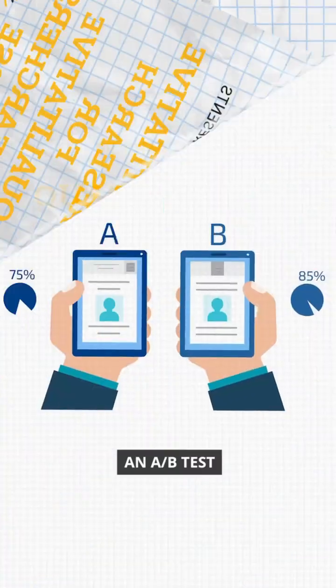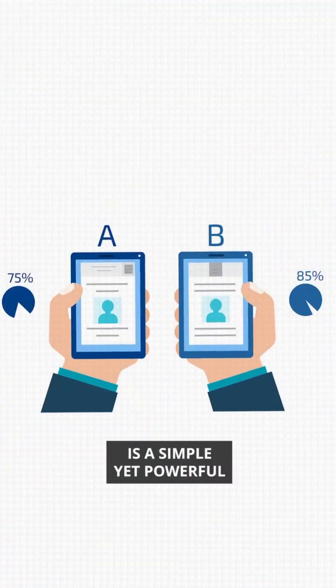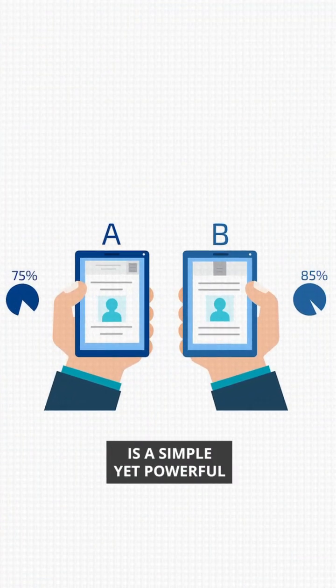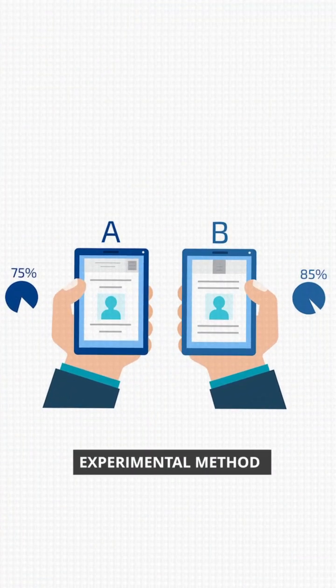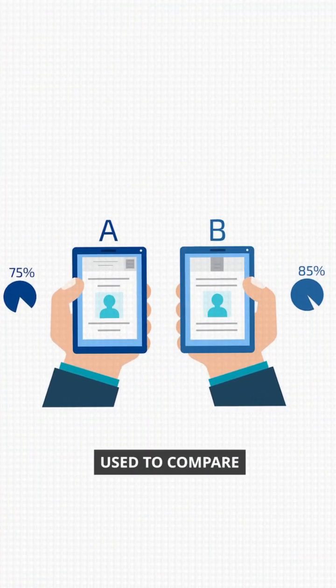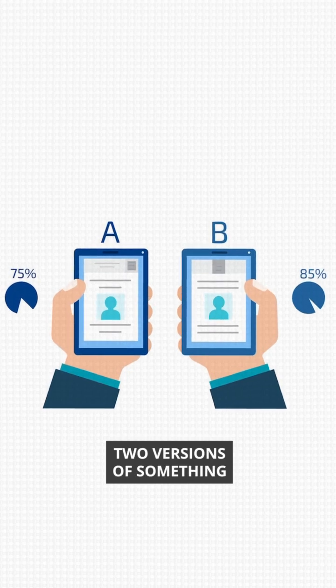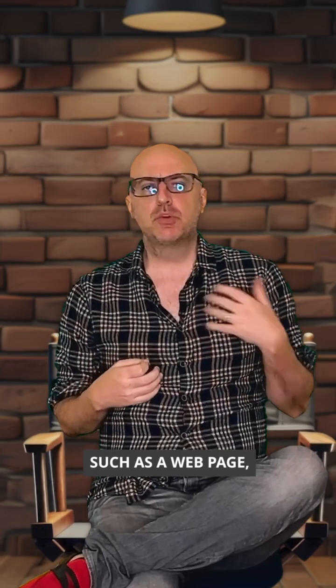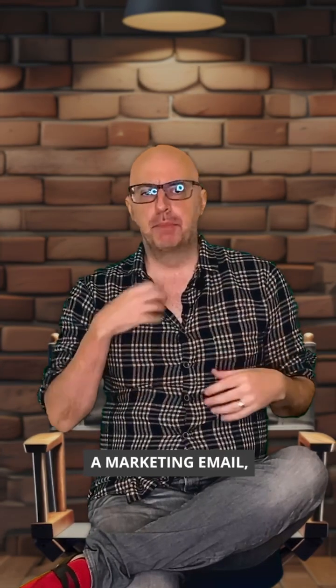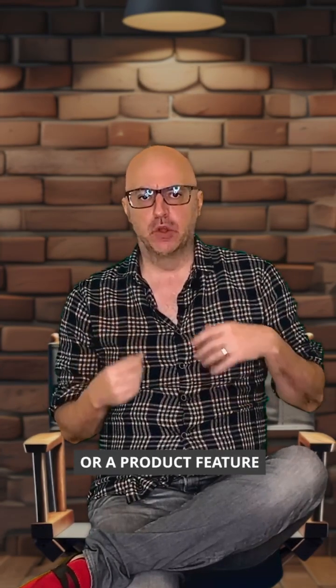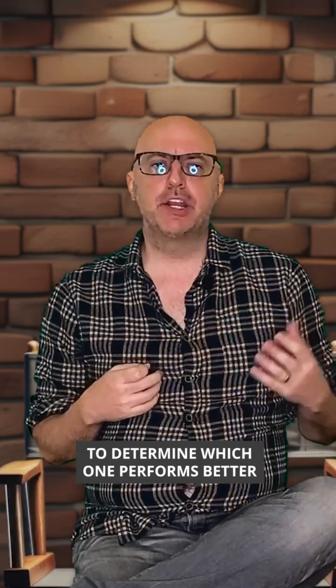An A-B test is a simple yet powerful experimental method used to compare two versions of something, such as a web page, a marketing email, or a product feature, to determine which one performs better based on a specific metric.